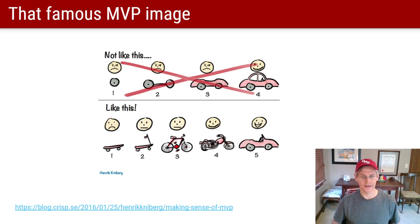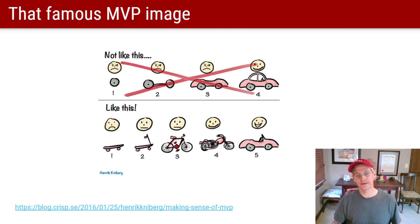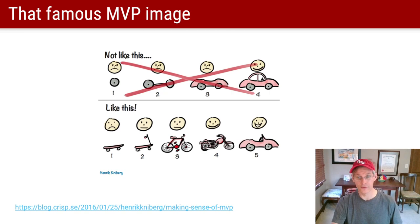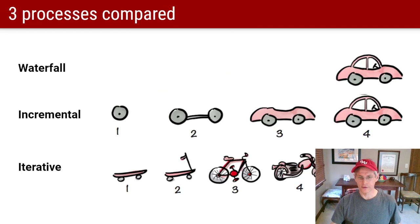At some point you've probably seen an image that looks like this, explaining the difference between an incremental process and an iterative process. The idea behind doing iterative processes is that at every step along the way you actually have a working system that provides some value — in contrast to having a design for a large system that you build piece by piece. A single wheel or the body of a car doesn't do you any good, and that's the major distinction people are drawing here.